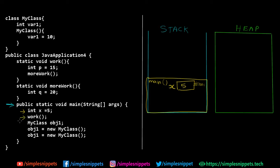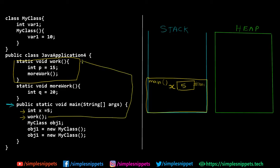At the second line, we are calling the method work. The control is transferred from the main method to the work method. As mentioned, methods are added on top of the stack. This is the second method — work — which is called, and a new memory area is reserved for this work method, which goes on the stack.